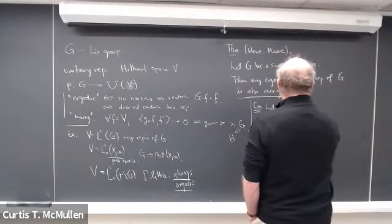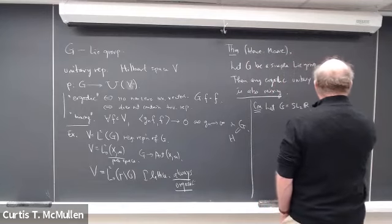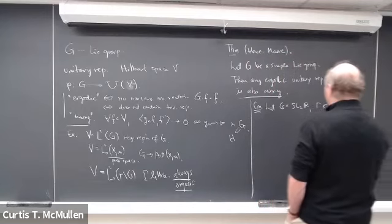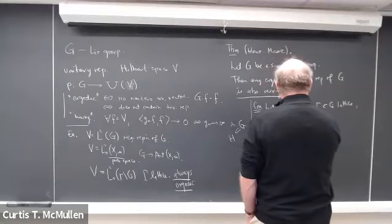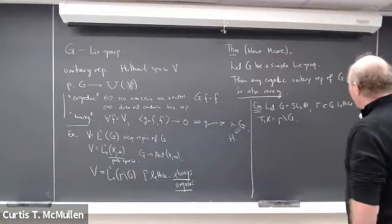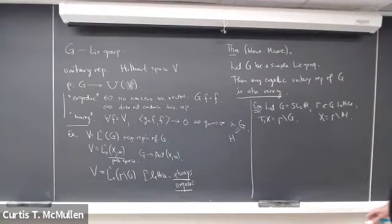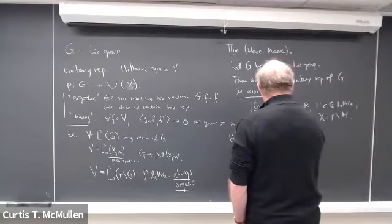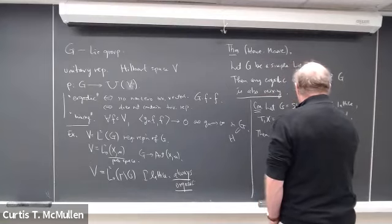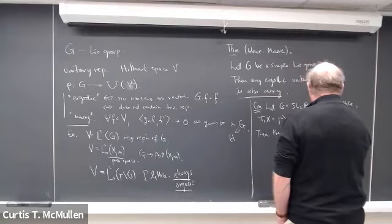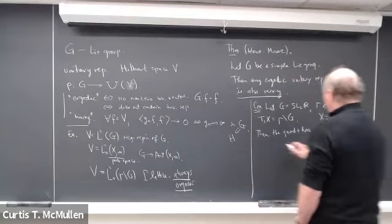Let G equal SO(2,1)(R), Γ a lattice in G, and T¹X equal Γ\G, where X is the quotient surface. Then the geodesic and horocycle flows on T¹X are mixing.